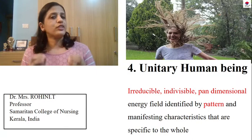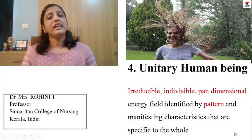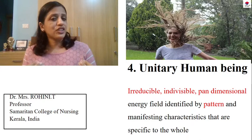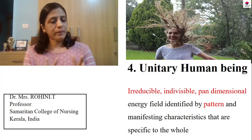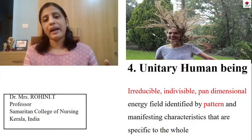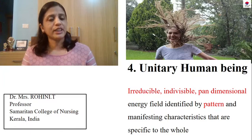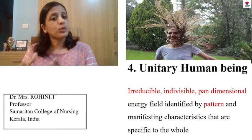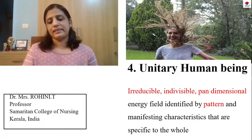Number 4 — she gave the fourth concept as unitary human being. Why did Rogers say 'unitary human being'? Because she believed this human being is irreducible and indivisible, pandimensional, and this energy field has a pattern specific to the whole. She believed a particular human being — the patient in front of me — cannot be reduced. His energy field is pandimensional with a specific pattern, and I cannot reduce him to just parts. Just because he is an amputee does not mean I see him as only a person with one leg — he is more than the sum of parts.